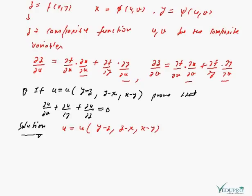Now we are taking the question: u = f(y−z, z−x, x−y). Then show that ∂u/∂x + ∂u/∂y + ∂u/∂z = 0. Let us see what is given in the solution.